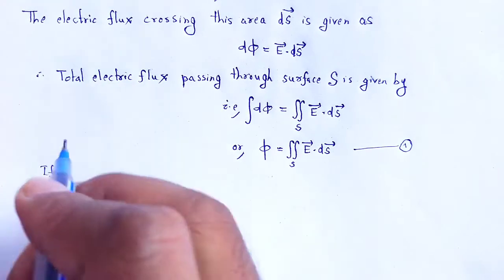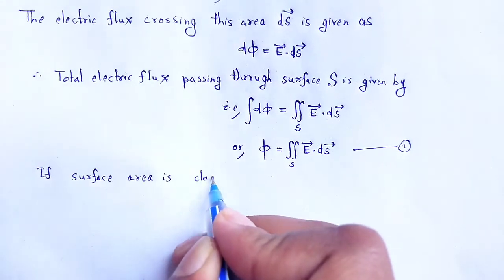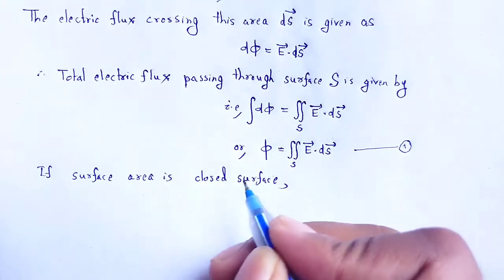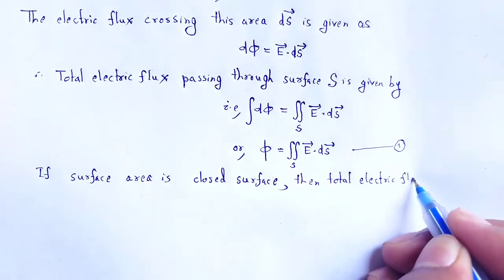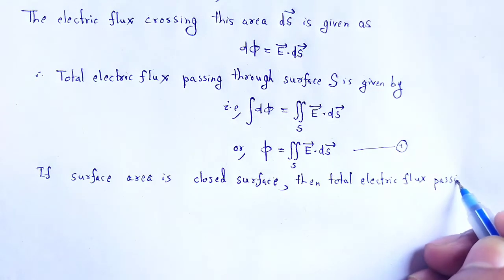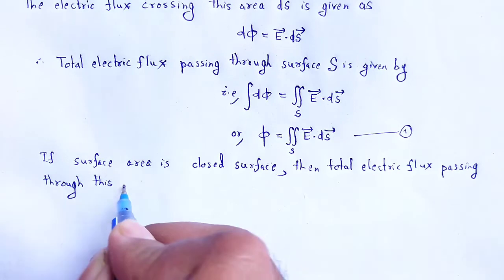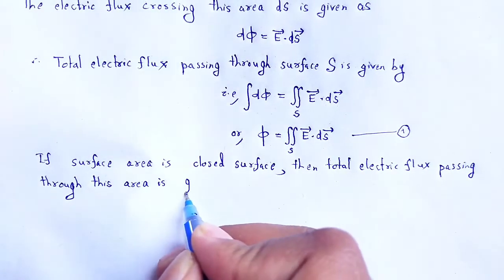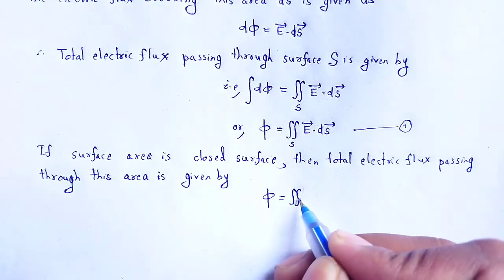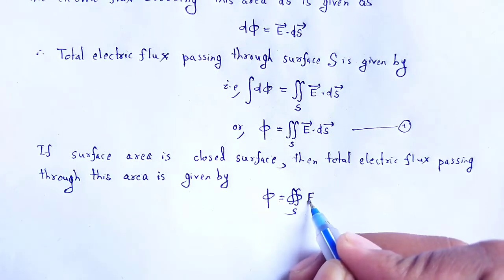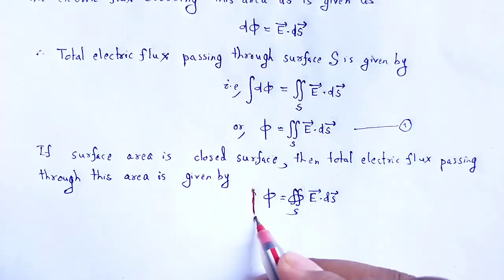If the surface area is a closed surface, then the surface integration changes to a closed surface integration. The total electric flux passing through the closed surface is phi equals the closed surface integration over S of E dot dS.